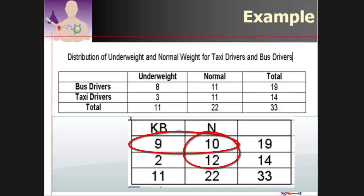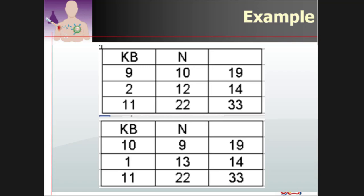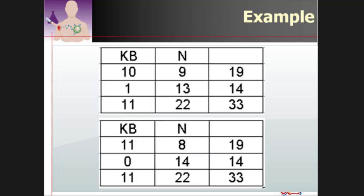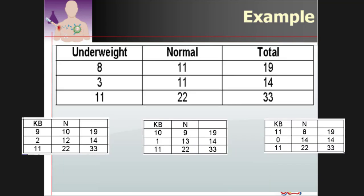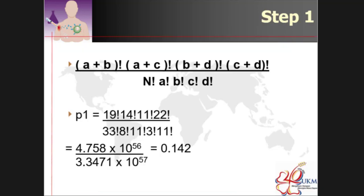So the smallest number is 3 become 2. The rest of the total stay the same. If the total stay the same, this one has to be adjusted. So instead of 8, this one become 9. Instead of 11, this one become 10. Why? 9 plus 10 become 19. This one become 12. Next, from 2 become 1. Again, all the other values stay the same. So for this to become 1, this one must be 10. For this to be 1, this one must be 13. This one become 0, this one become 11, this one become 8, this one become 14.